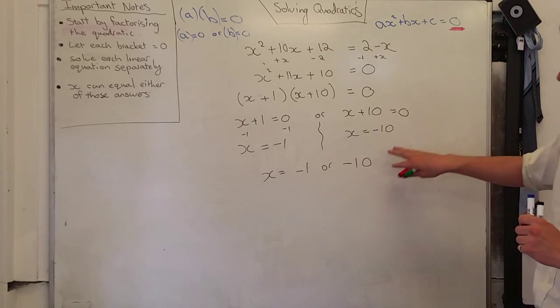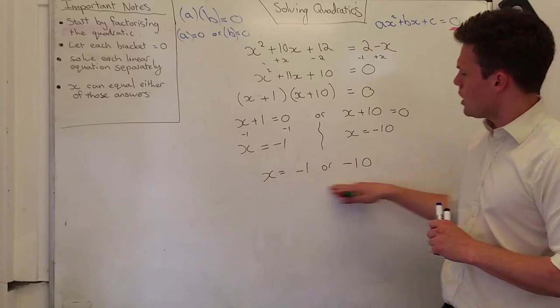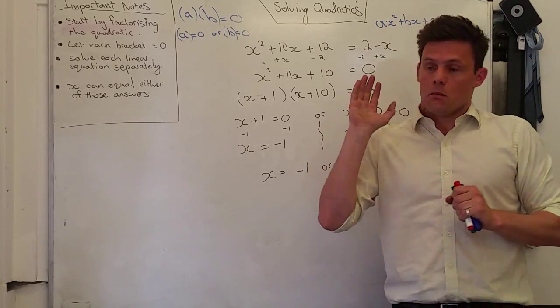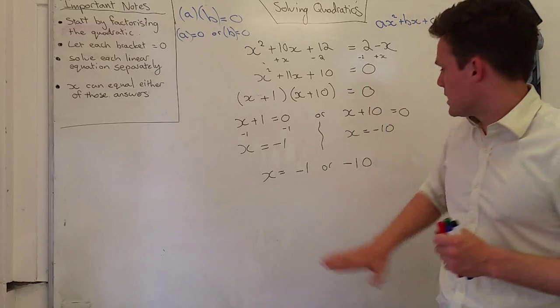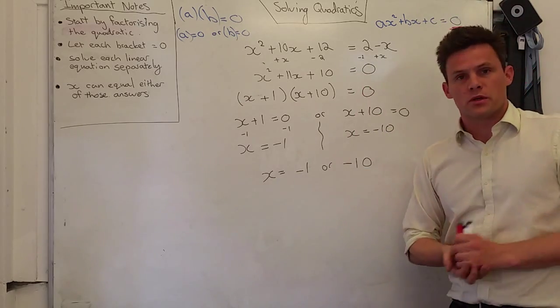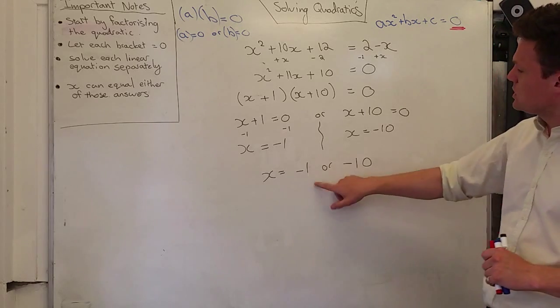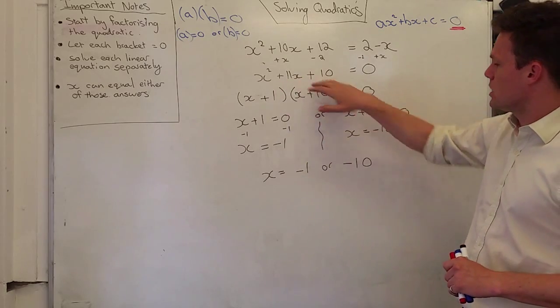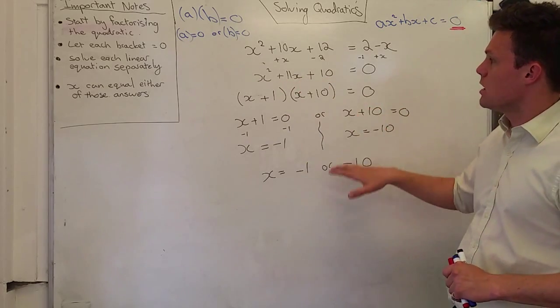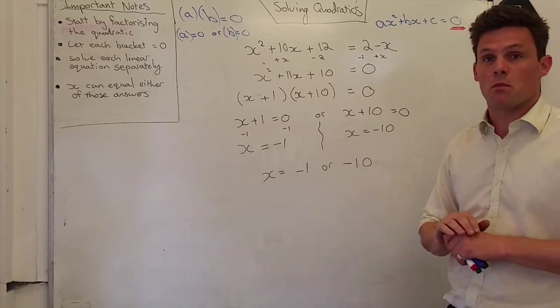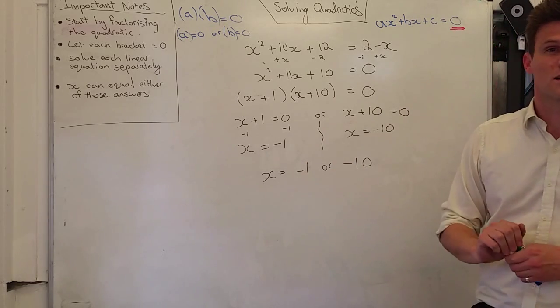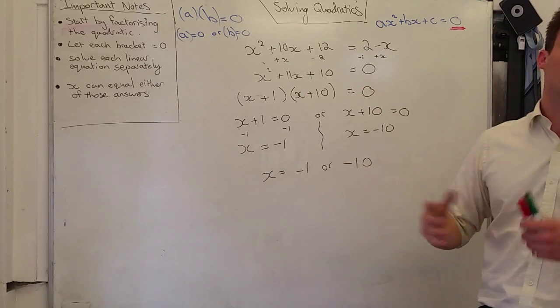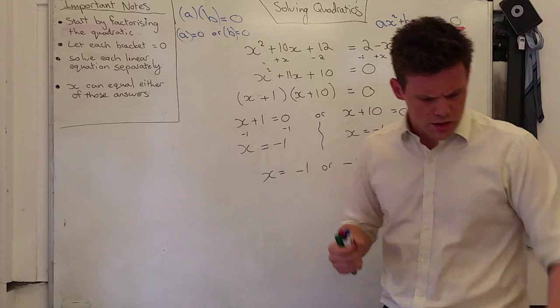Alright, and at this point, you'll notice that we've got two answers here, and that's totally fine. When you have a look at the video on plotting quadratic graphs, you'll understand exactly what these two numbers represent. So, it's alright that we get our two answers for x. And if you substituted negative 1 into this original equation, or you substituted negative 10 in, you would actually get the exact same answer. Alright, so you can experiment with that. Alright, let's try a couple more.